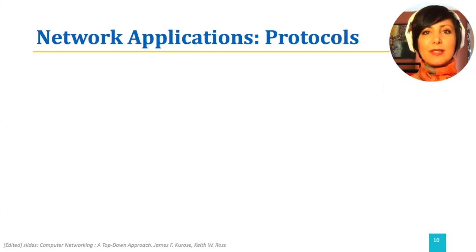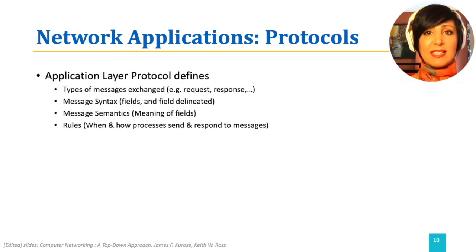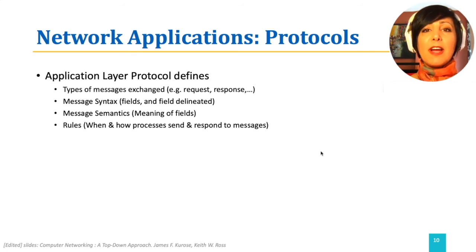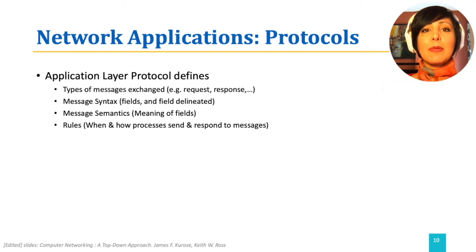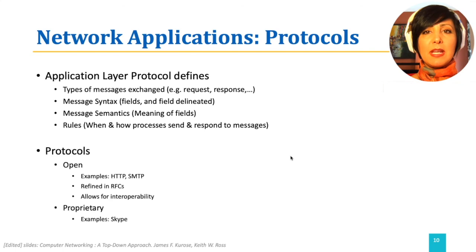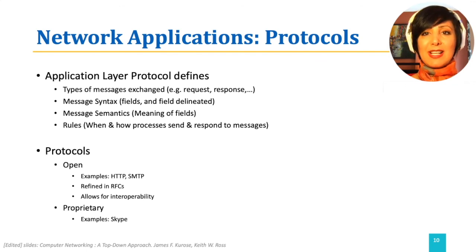Remember our discussions about protocols. A protocol defines the type of messages, message syntax and semantics, and what happens on message send and receipt. Application layer protocols define these details for application layer communication among processes. And like any other protocol, they can be open or proprietary. HTTP and SMTP are examples of open application layer protocols we will review shortly. Skype is an example of a proprietary protocol we will briefly discuss shortly.